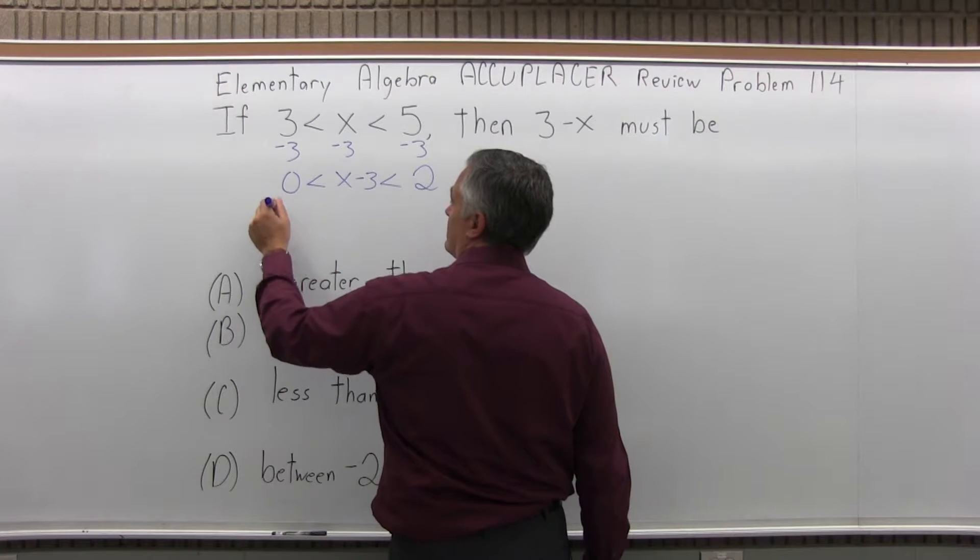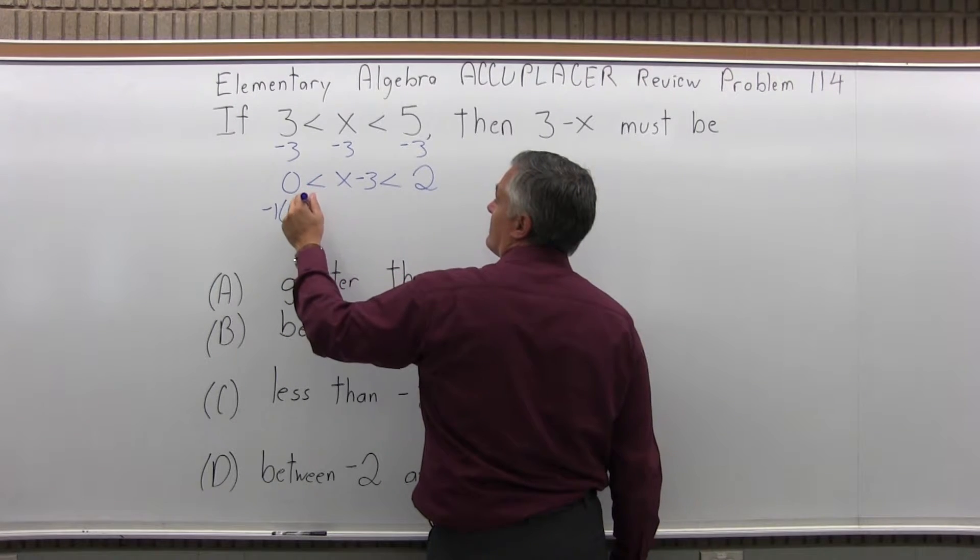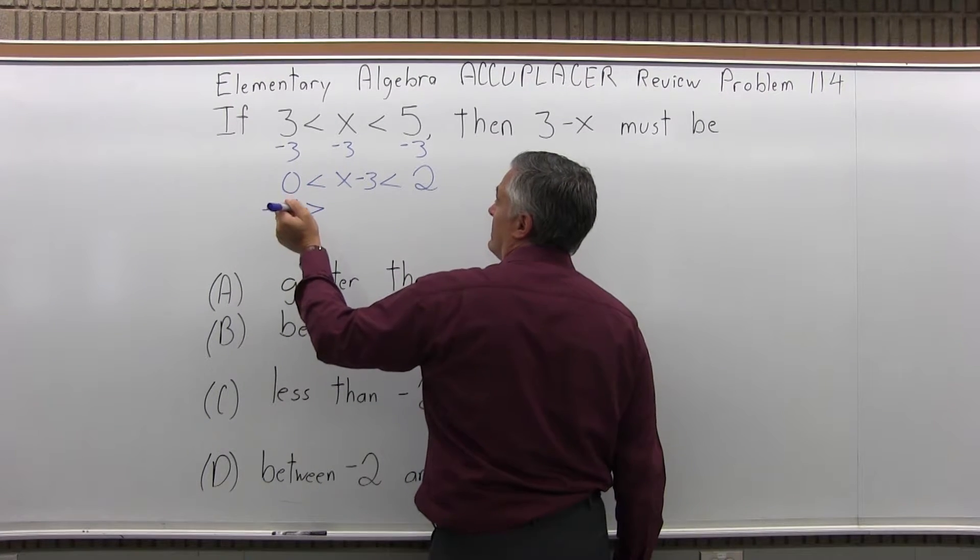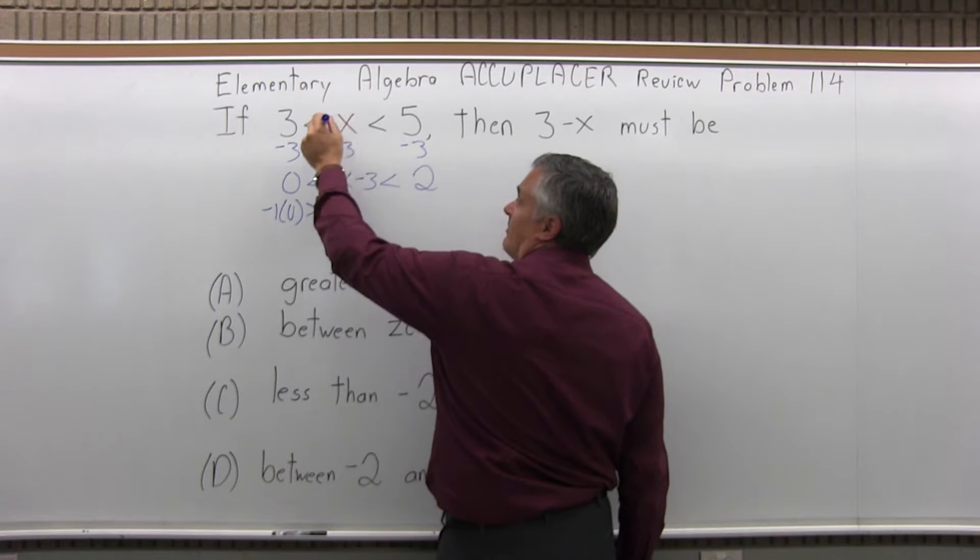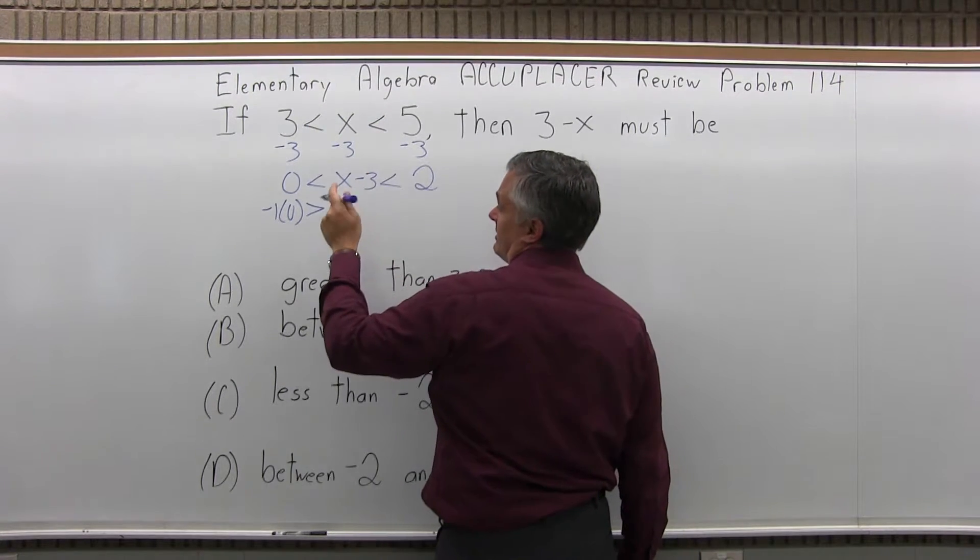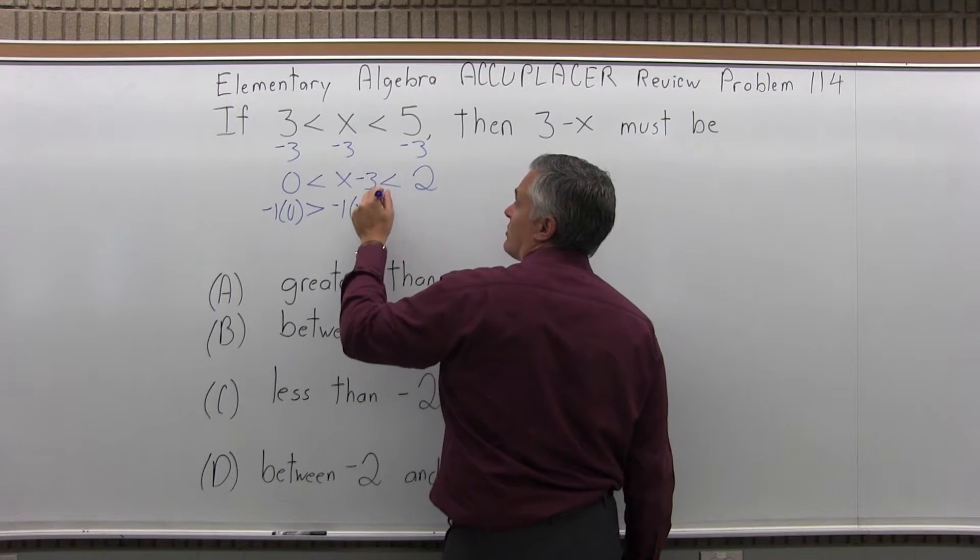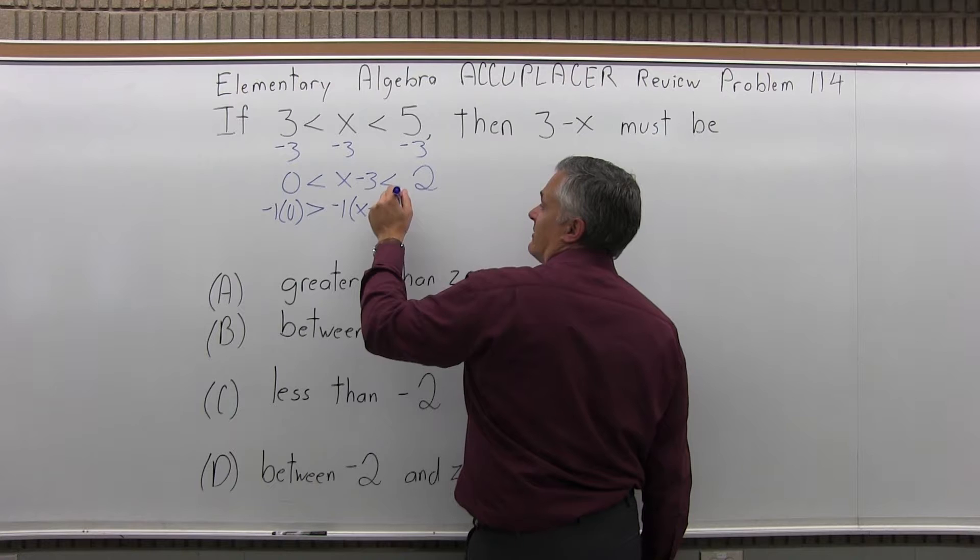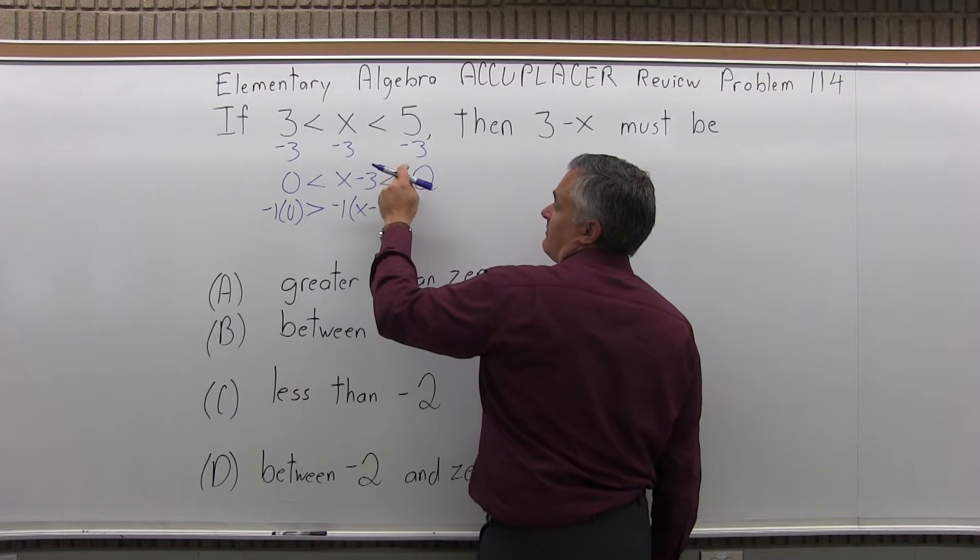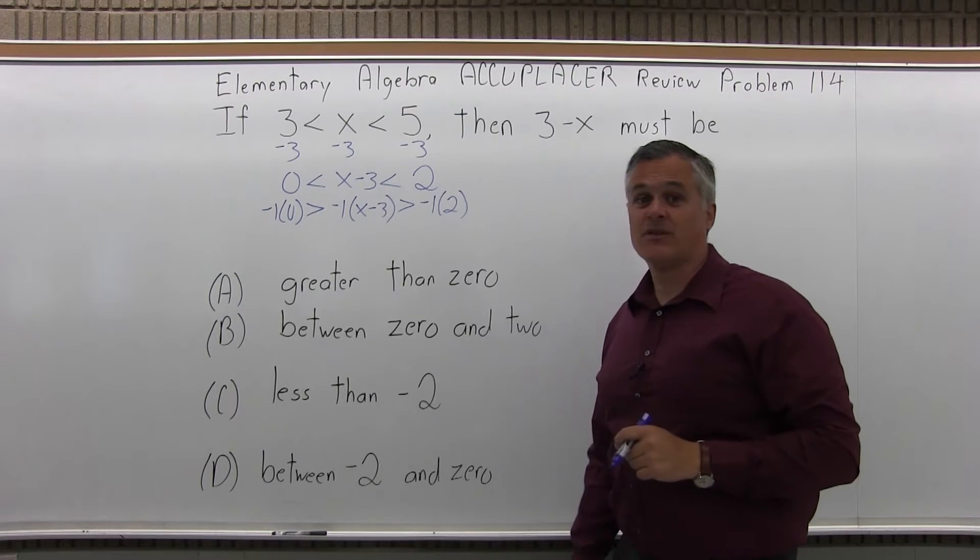So the first piece, negative 1 times 0. Now, because I'm doing times negative 1, it has to flip the symbol. If I multiply or divide by a negative, it's going to flip the direction of the inequality symbol. And then I'm going to do negative 1 times x minus 3, and it's going to flip this, and then negative 1 times 2. So I've multiplied everything times negative 1.